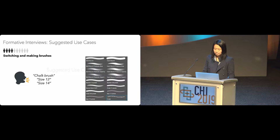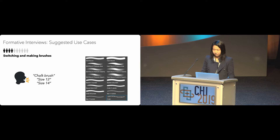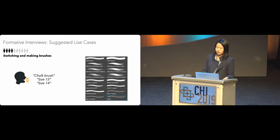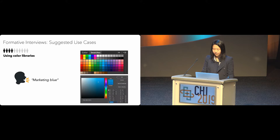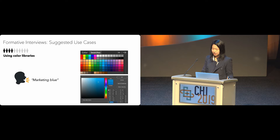Here are a few examples of use cases. Some experts wanted speech support especially when using a brush, since drawing requires focus on the main canvas. Currently they have to move focus to find a specific brush among many listed brushes. So some experts envisioned using speech to change a brush tip by saying its name or change parameters like size or opacity while staying focused on their drawing task. Some experts mentioned color libraries — instead of searching through swatches or entering RGB values, they envisioned saying something like 'marketing blue' to evoke a preset color.